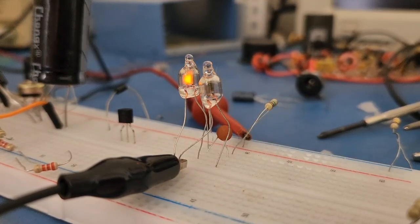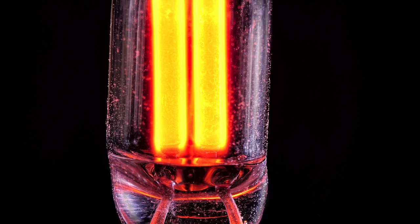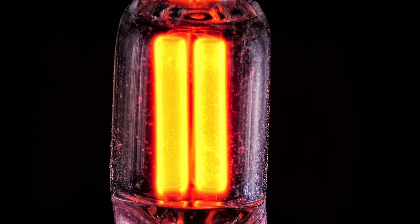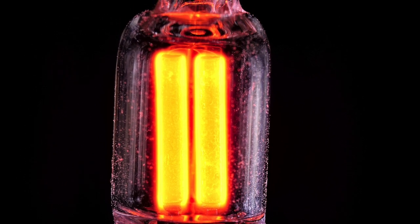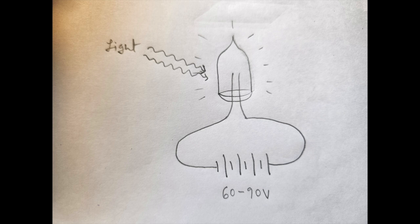Neon lamps, typically known for emitting light, can also be used to detect light thanks to the photoelectric effect. A neon lamp consists of two electrodes inside a gas-filled bulb. When 60 to 90 volts is applied, the gas ionizes, allowing the electrodes to conduct, and the lamp lights up.